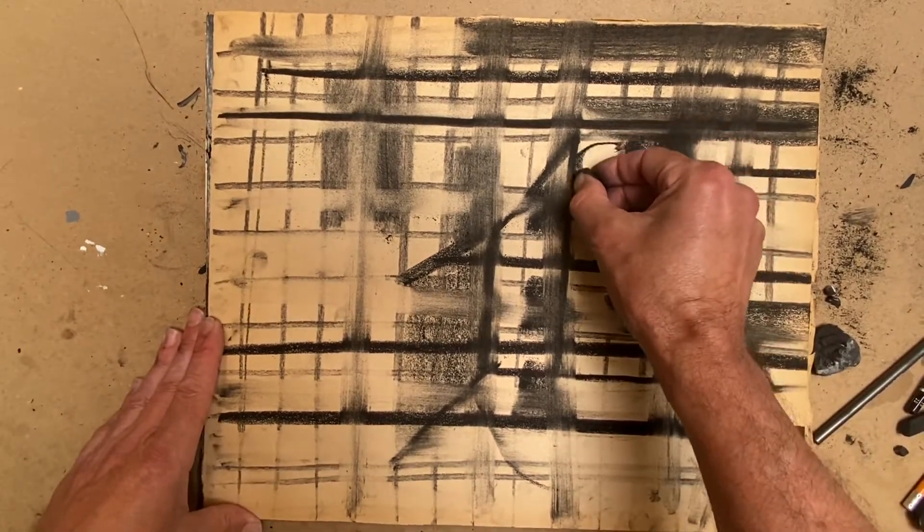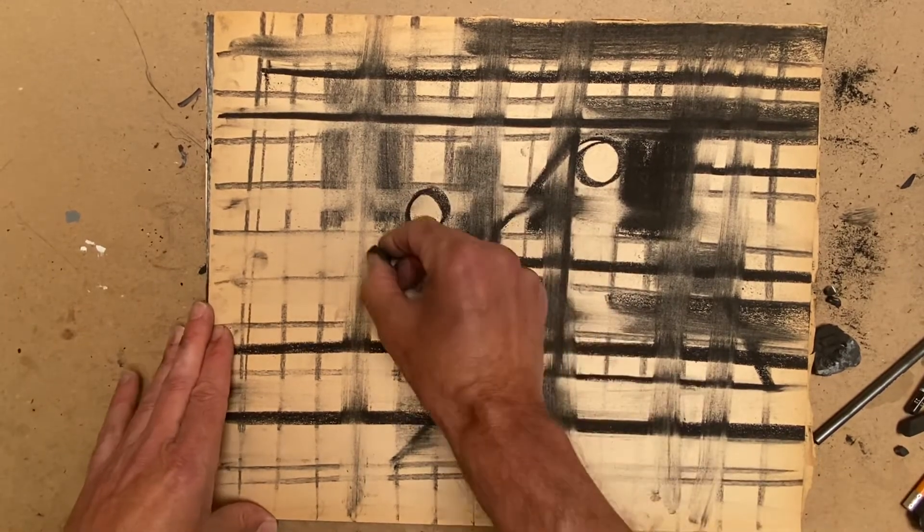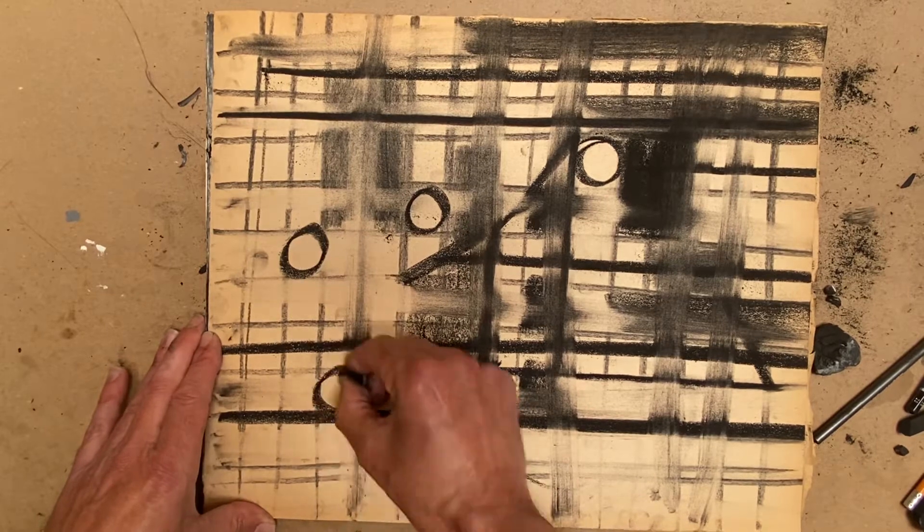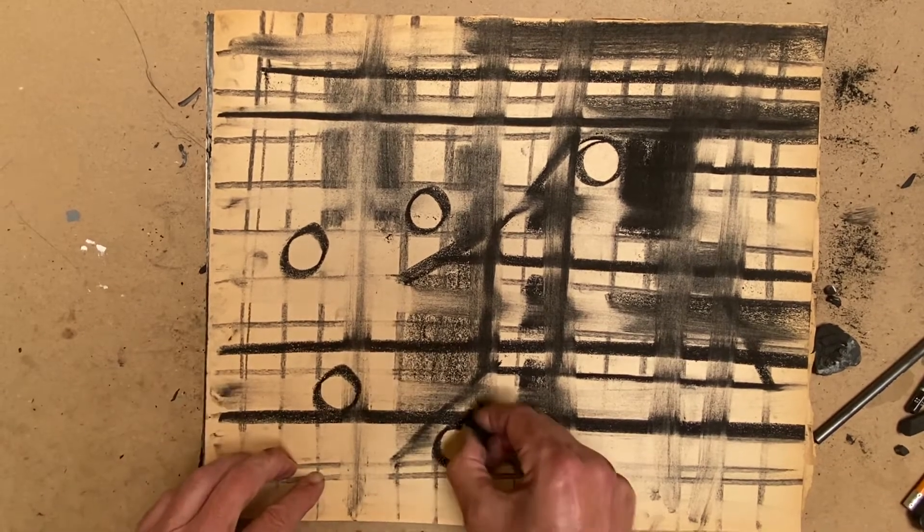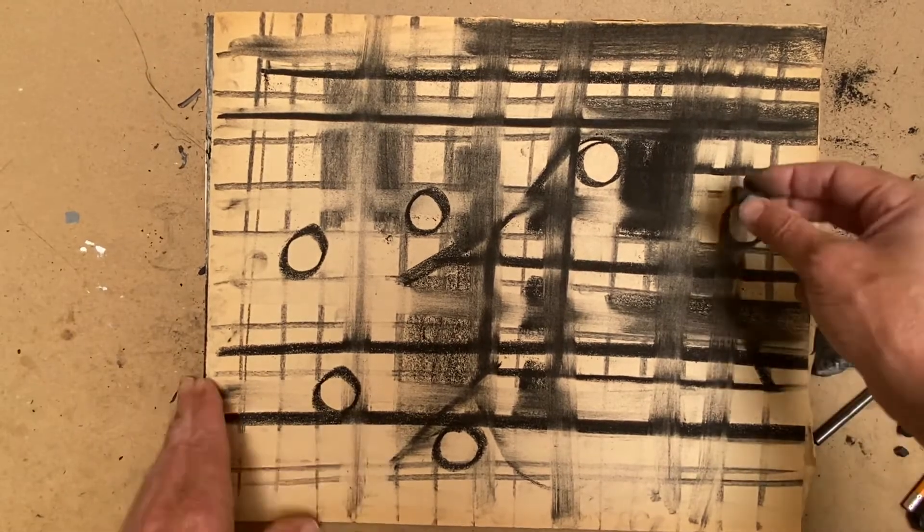So now within these squares, now I've decided that I want to start making some circles in random spots in some of the squares. But again, they're all following the grid.